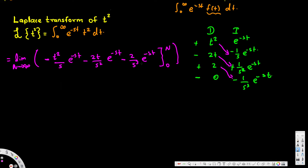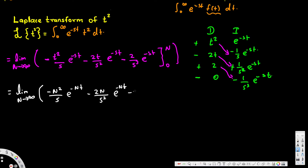Now we expand by substituting n and 0 for t. Substituting n, we get: negative n squared over s times e to the negative sn, minus 2n over s squared times e to the negative sn, minus 2 over s cubed times e to the negative sn. The correct substitution uses sn in the exponent, not just n.